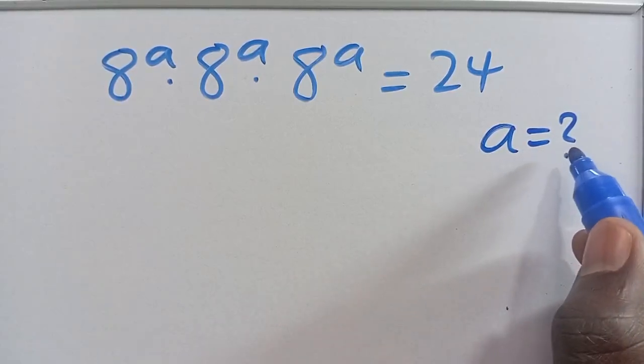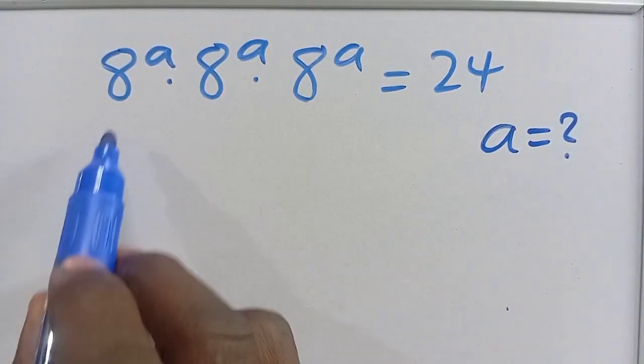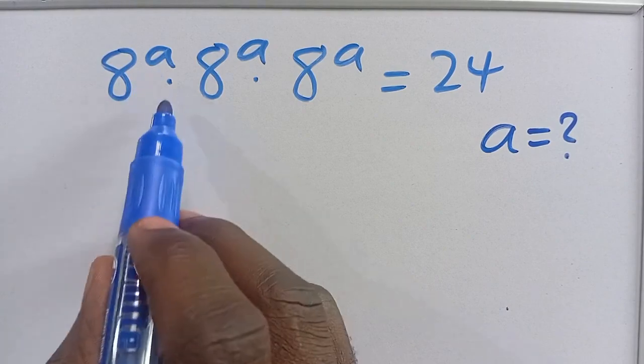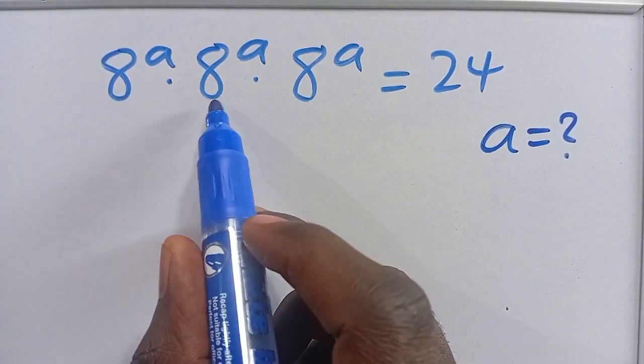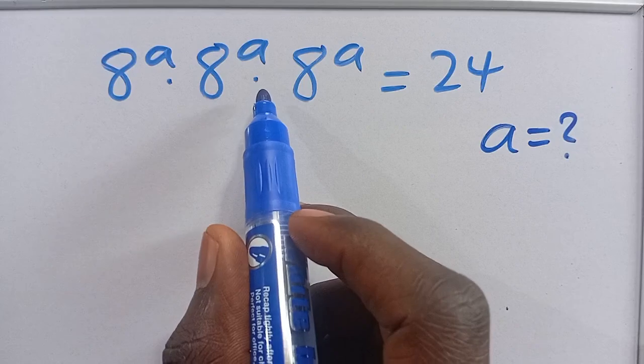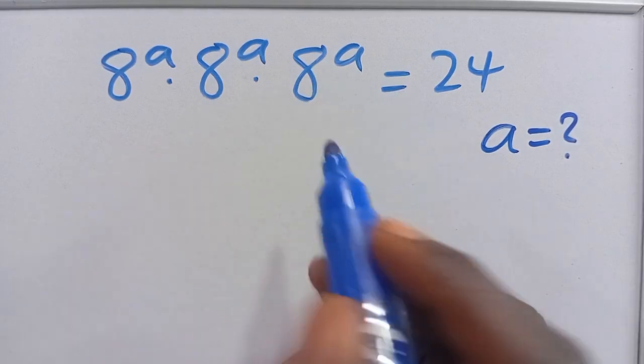Hi! What is the value of A, given that 8 to the power of A, multiplied by 8 to the power of A, multiplied by 8 to the power of A, equals 24?